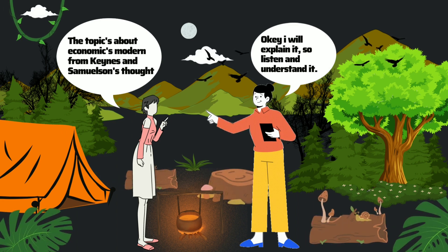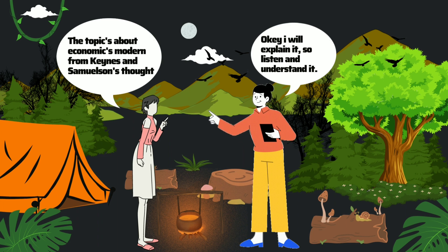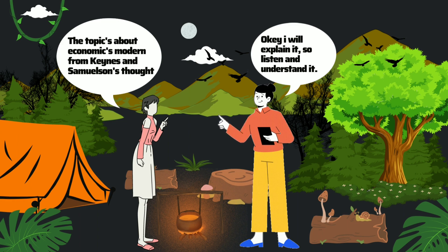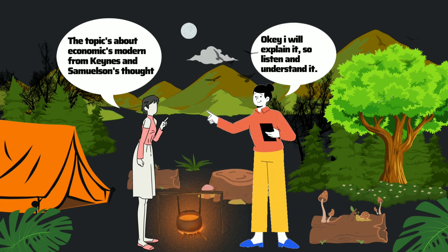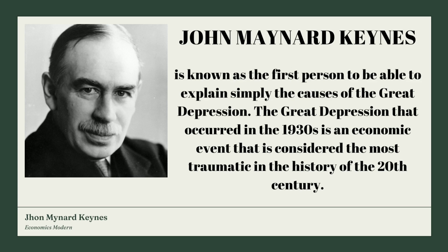The topic is about modern economics from Keynes and Samuelson. Okay, I will explain it, so listen and understand it. John Maynard Keynes is known as the first person to be able to explain simply the causes of the Great Depression. The Great Depression that occurred in the 1930s is an economic event that is considered the most traumatic in the history of the 20th century.